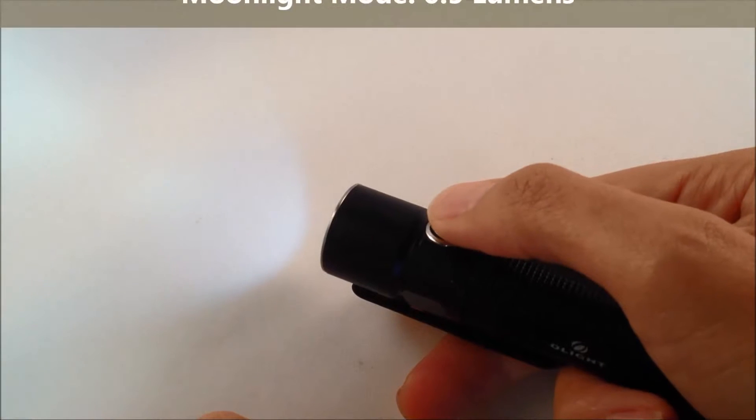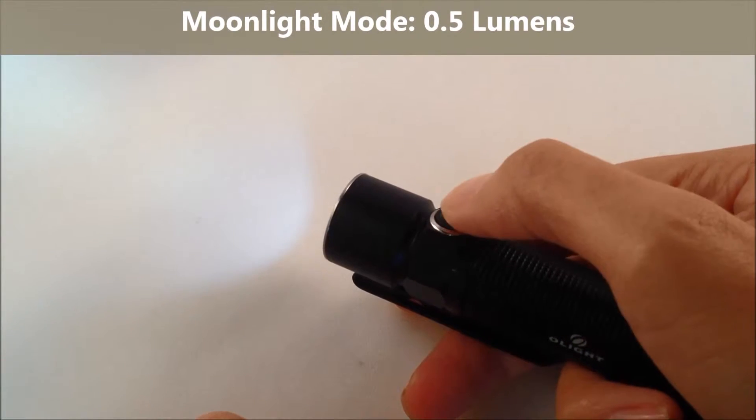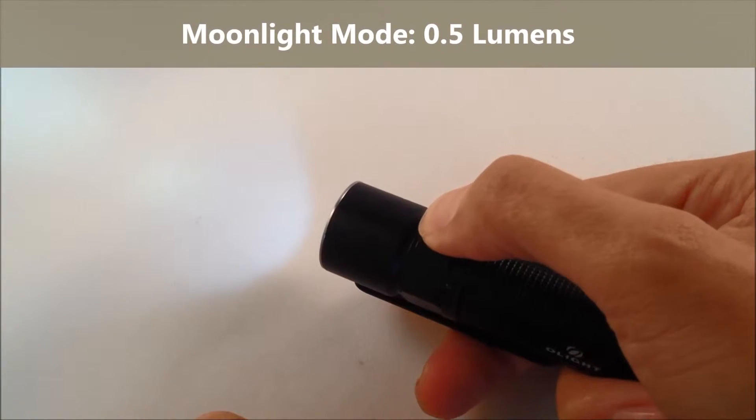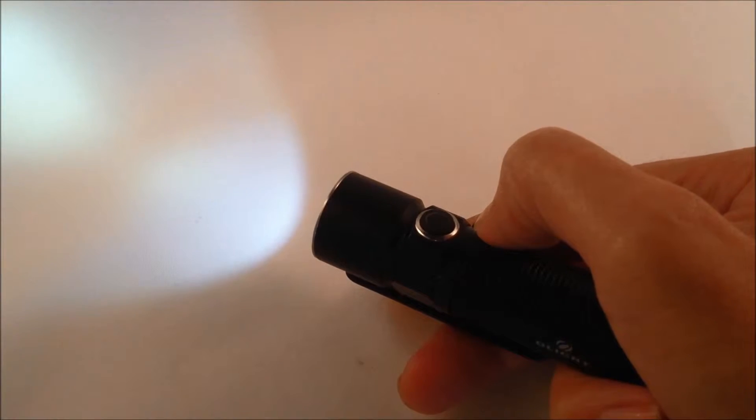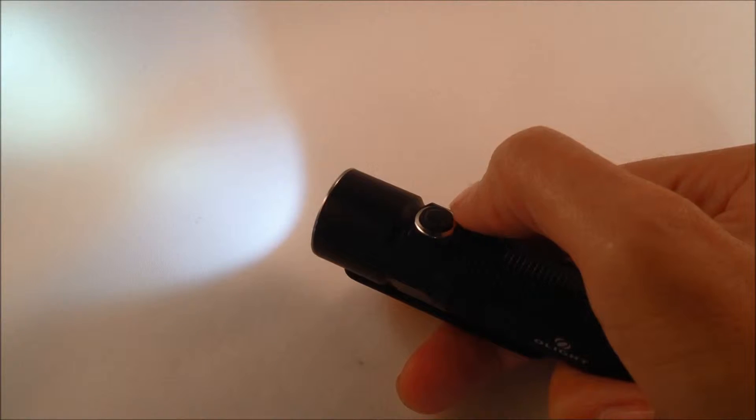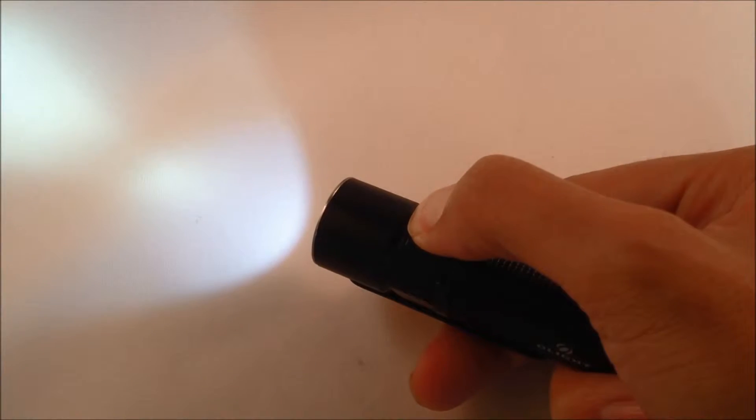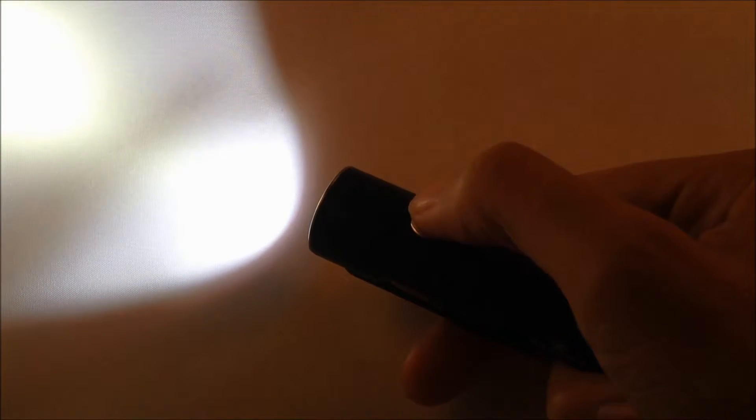Once the light is on, then I can cycle through the different brightness levels just by holding down the switch. If I hold down, I can release at any point. You see I released there, and I can hold at that particular brightness level, which this is 5 lumens.